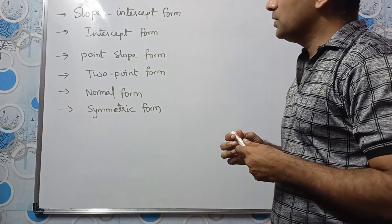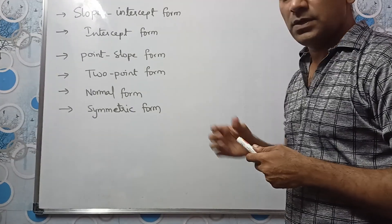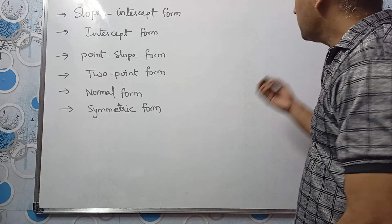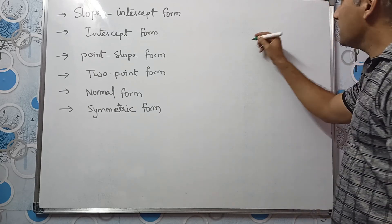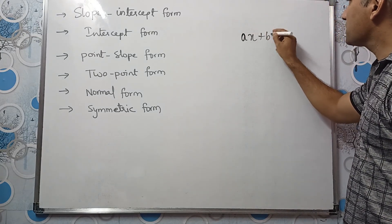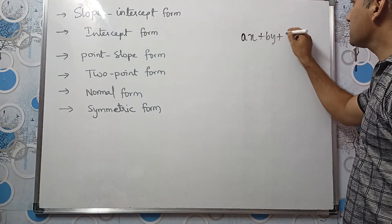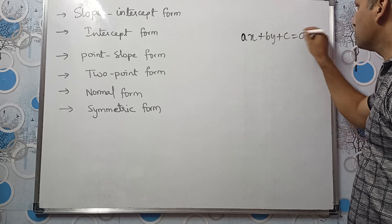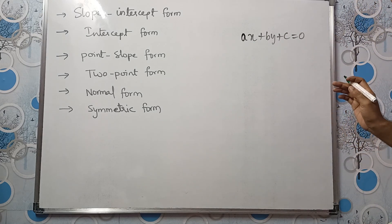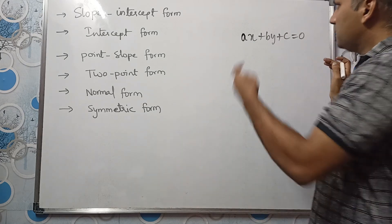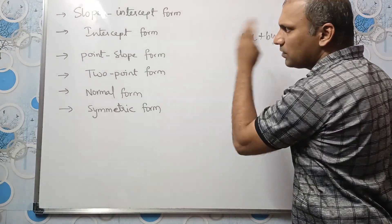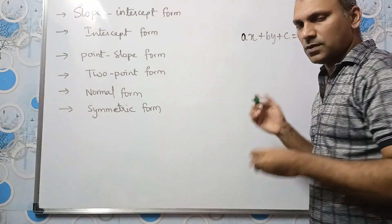These forms are used to represent a straight line. In 10th class, we studied that the general form of a straight line is Ax + By + C = 0. This general form can be represented in any one of these six forms.